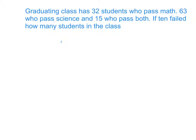In this example, the graduating class is 32 students who pass math, 63 who pass science, and 15 who pass both. If 10 people didn't pass at all, how many students are totally in the class?